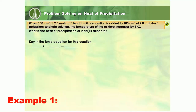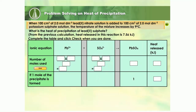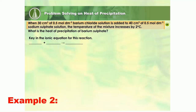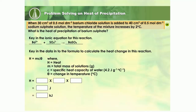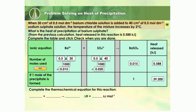Key in the ionic equation for this reaction. Key in the values into the formula to calculate the heat change in this reaction. Complete the table to calculate the heat of precipitation of lead sulfate. Complete the thermochemical equation for this reaction. Key in the ionic equation for this reaction. Key in the data into the formula to calculate the heat change in this reaction. Complete the table to calculate the heat of precipitation of barium sulphate. Complete the thermochemical equation for this reaction.